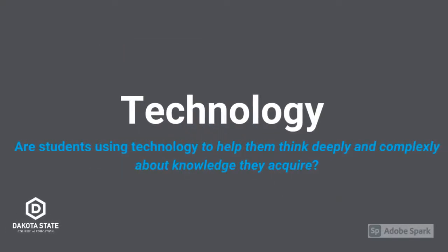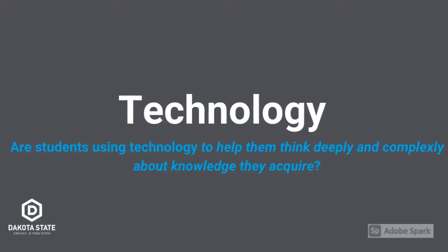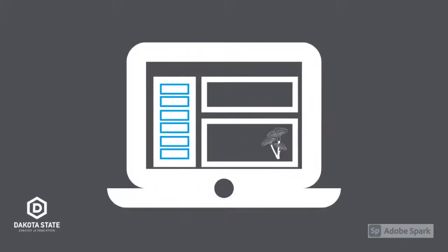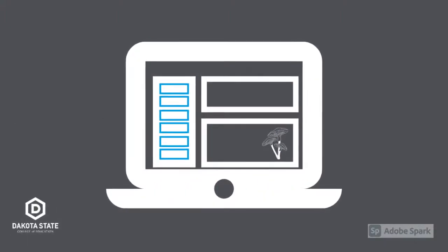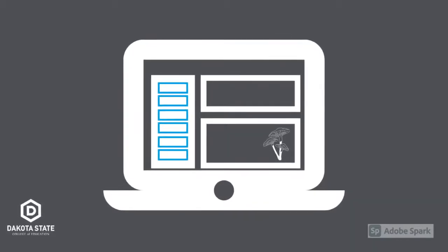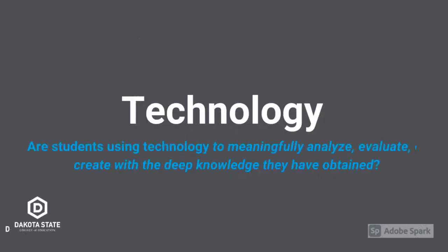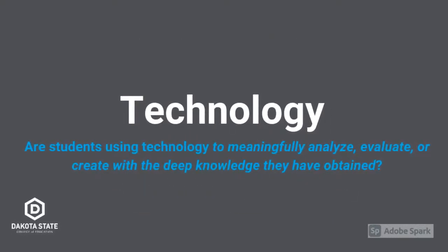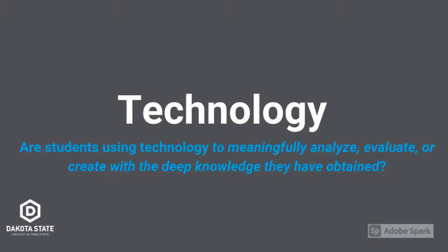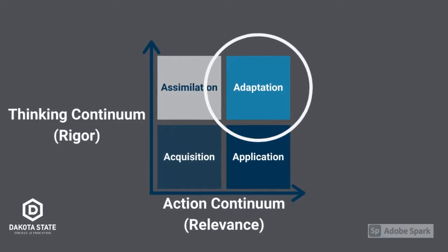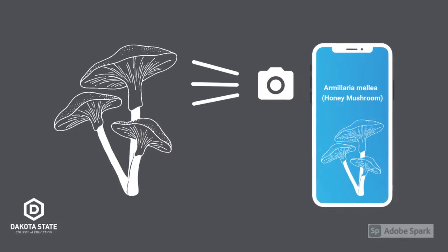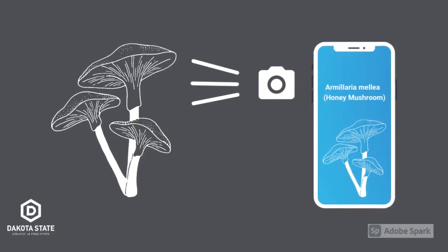Are students using technology to help them think deeply and complexly about knowledge they acquire? That would be in the assimilation quadrant. This might look like students researching fungi online, perhaps by watching YouTube videos or reading online articles to understand the intricate differences between types of fungi and how they function. And finally, are students using technology to meaningfully analyze, evaluate, or create with the deep knowledge they have obtained? That would be in the adaptation quadrant — this might look like students creating an app that allows users to scan fungi with the phone camera to identify its type.